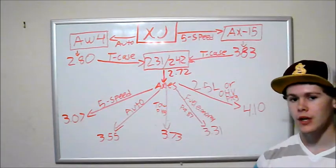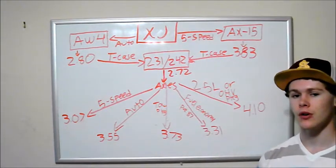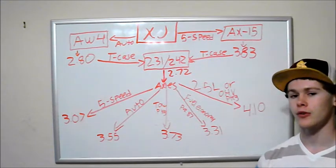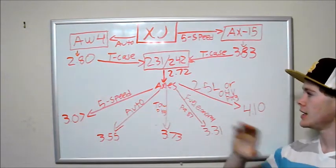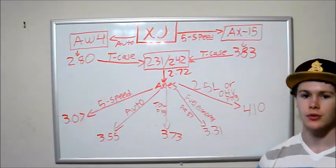If you have the 242, you have 2-wheel drive, neutral, 4-wheel part-time, 4-wheel full-time, and then 4-low. So just a little difference on the shift levers there, but either way you do have a 2.72 ratio there.